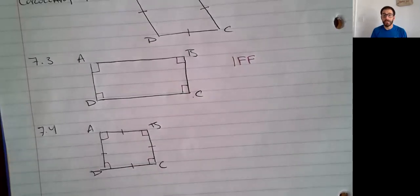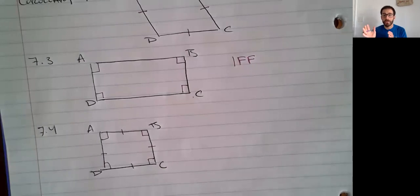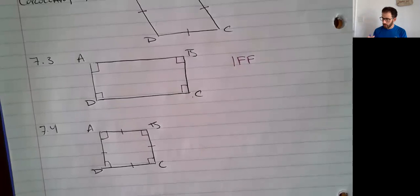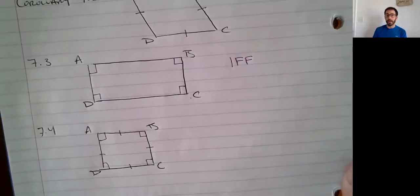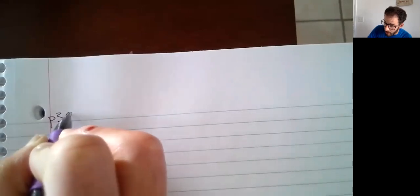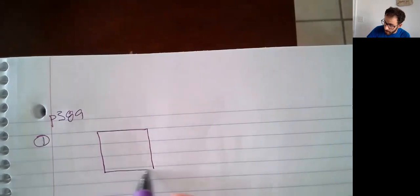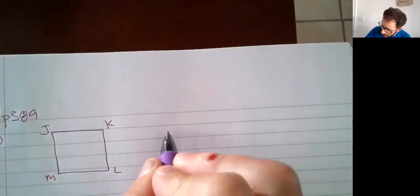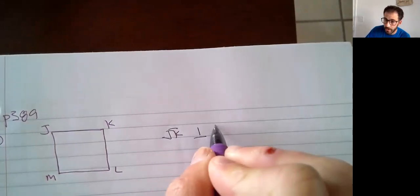On page 389 there is a really cool Venn diagram to help organize your thoughts on where squares fit in with rhombuses and rectangles. We're going to go down to the monitoring progress at the bottom of page 389. For any square, I want you to have a picture of square JKLM. Is it always or sometimes true that JK is perpendicular to KL?